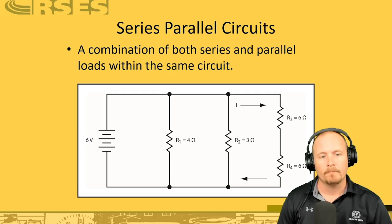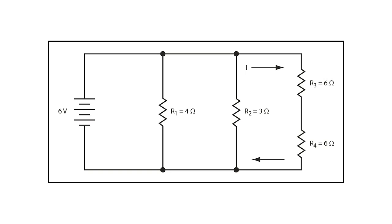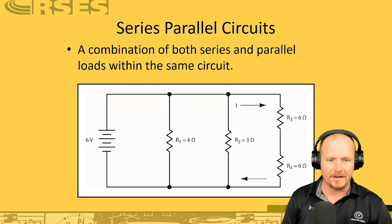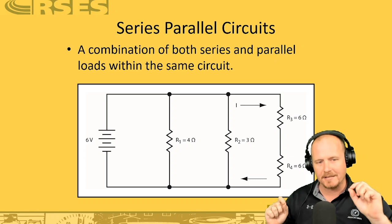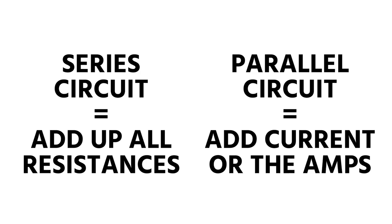A series-parallel circuit is just a combination of parallel and series circuits. In the series portion, you treat it by adding together the series resistances — for example, two 6-ohm resistors in series make 12 ohms — and then you have additional parallel paths. To remember the key rules: in a series circuit, you add the resistances; in a parallel circuit, you add together the current or amps.